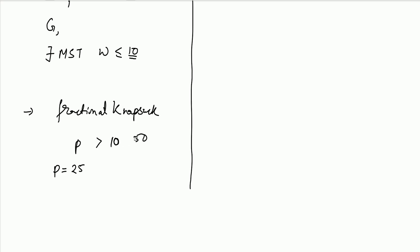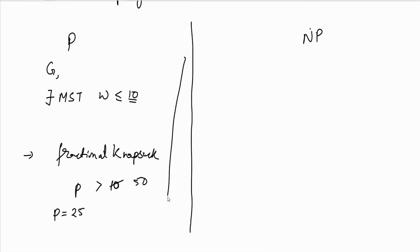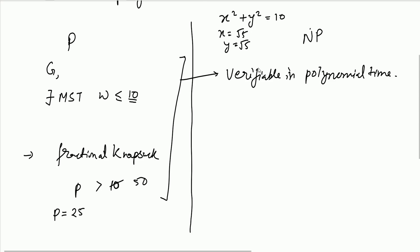And all these problems are also verifiable in polynomial time because we can just take the solution and verify it. Solving a problem is the harder part compared to verifying it. For example, if I ask you to find X and Y such that X² + Y² = 10, that's hard to solve. But if I give you X = √5 and Y = √5, you can just substitute and verify whether it equals 10. Verification is easy, but solving the problem may be difficult.